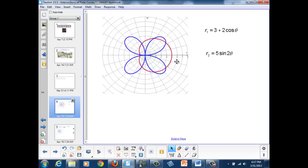You're right. It's the red graph, the limousine. That means that R2, 5 sine 2 theta, is our four-leaf rose.